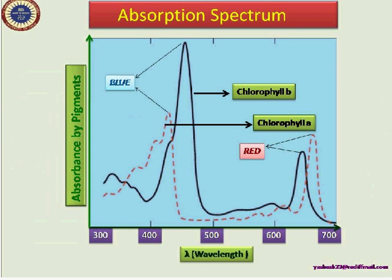The next question is: what is an absorption spectrum? When we plot a graph between absorbance by a pigment and the wavelength of the visible range, we see that the optimal absorption peak is coming in the red and blue regions, while in the green region the light is absorbed ineffectively. Both chlorophyll a and chlorophyll b absorb optimally in the blue and red range. The obtained spectrum is known as the absorption spectrum.